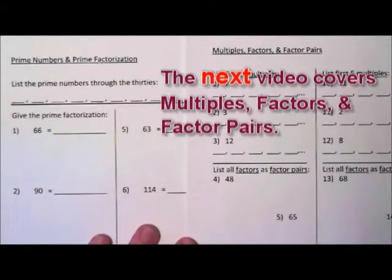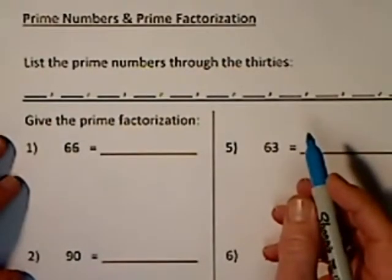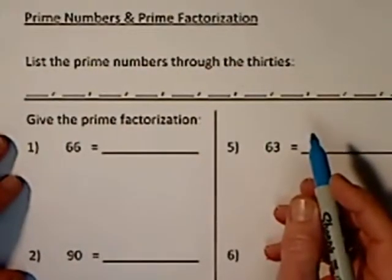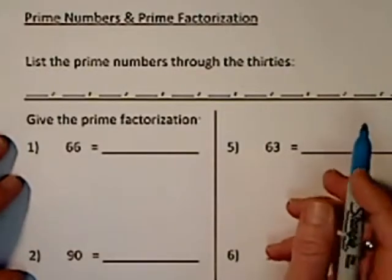We'll start with our prime numbers. Prime numbers are divisible only by one and themselves. If a number is divisible by anything else, then it's called composite.